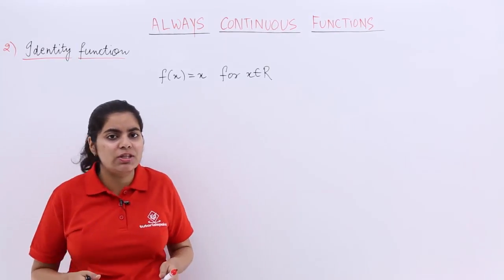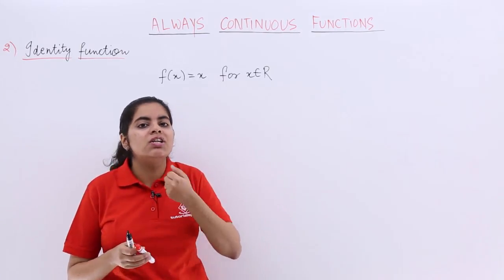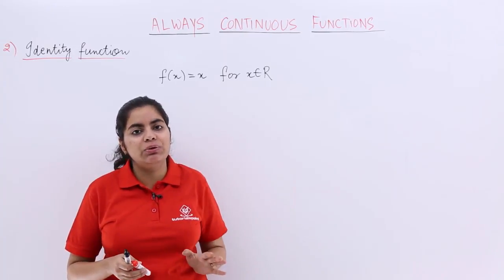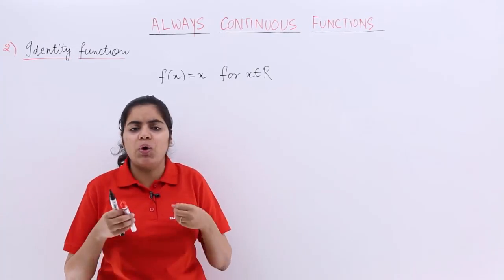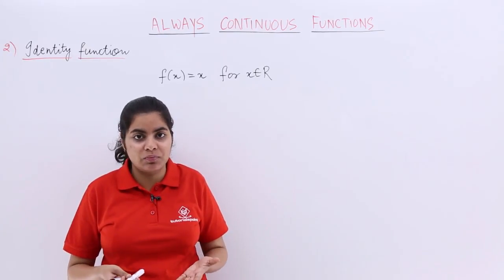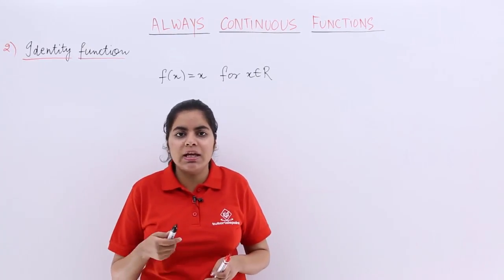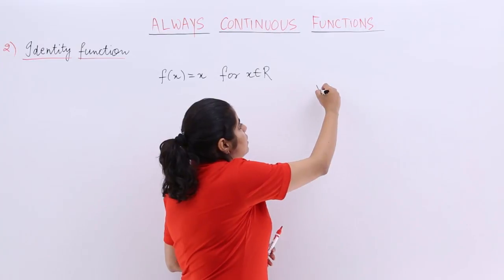Wherever in your question you find an identity function, straight away say that it is continuous. You don't need to verify or prove or calculate why it is so. Now identity function is y equals x.